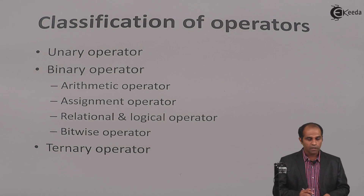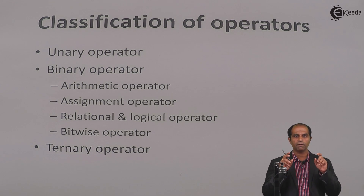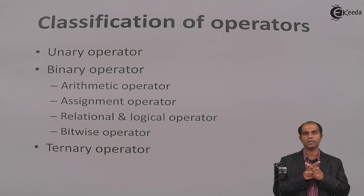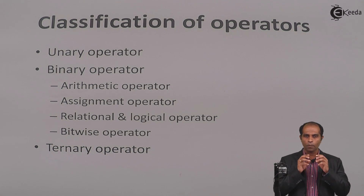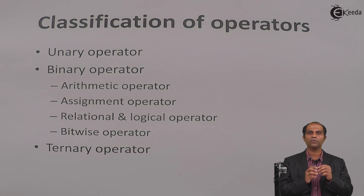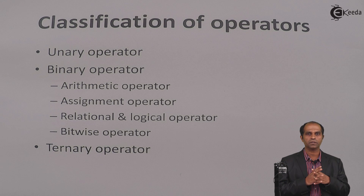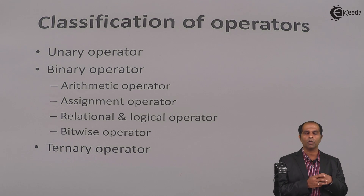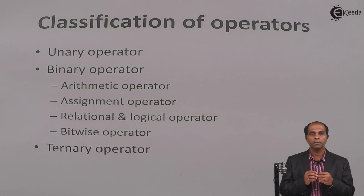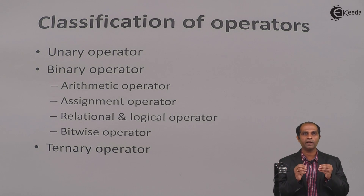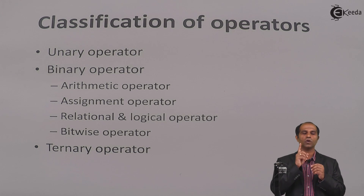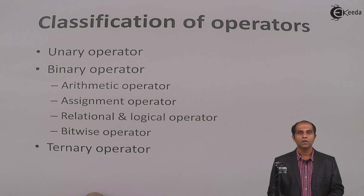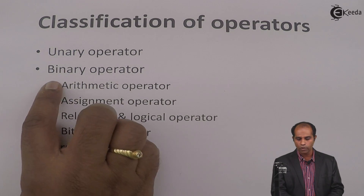Before we discuss about these operators, let us first make a classification. The entire set of C language operators are classified into three sections and the classification is based on the number of inputs which they require for operations. C language operators have something correlated to your mathematics — some operators you might find very easy. A set of operators might just use only one data; an operator which accepts only one data to operate, we call that as unary operator. A set of operators might accept two data; we call them as binary operators.